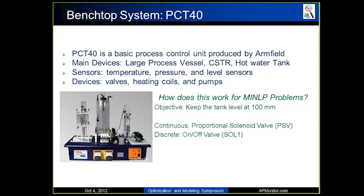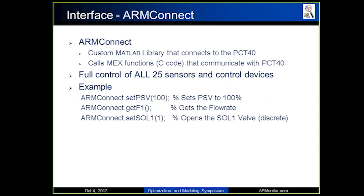Basically our objective function is that we want to keep the tank level at 100 millimeters. Our variables that affect it are both a proportional solenoid valve, so a valve that can go from 0 to 100 percent, and a discrete valve which is on or off, like a binary value. So both these variables are things that we can control to reach the objective function. We're trying to optimize it real-time on a real system.